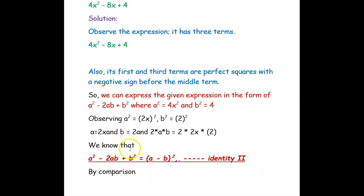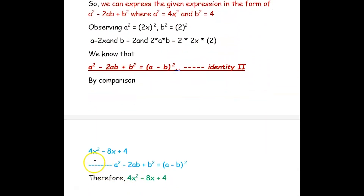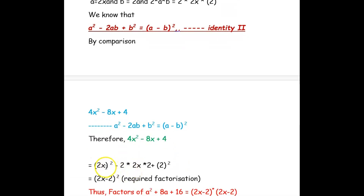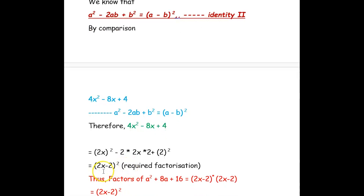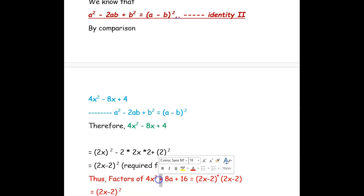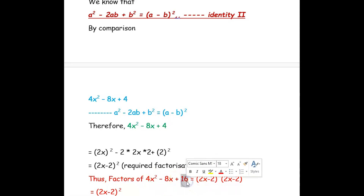Now we are comparing the given expression with this identity. So 4x squared minus 8x plus 4, we compare it with (2x) squared minus 2 into 2x into 2: 2 into 2 is 4, and 4 into 2 is 8, giving 8x, plus 2 squared is 4. So we can use this identity and express the expression as (2x − 2) whole squared. Thus, 4x squared minus 8x plus 4 can be factored as (2x − 2) whole squared.